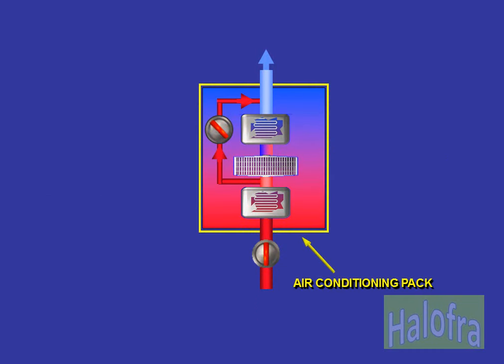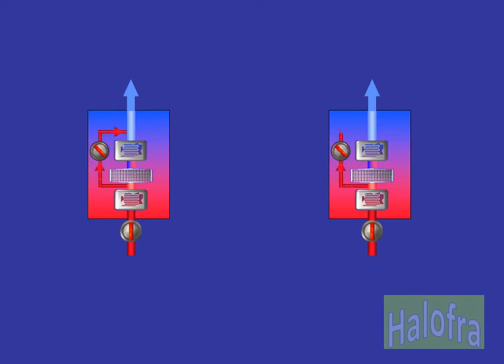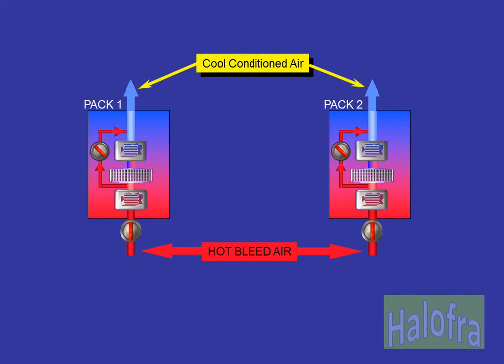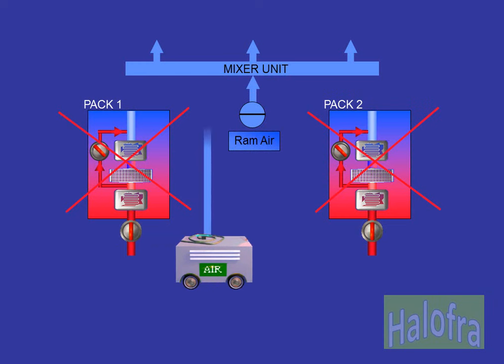To make things simpler, let's define the area within the yellow box as a pack. The two air conditioning packs operate automatically and independently to provide cool, conditioned air. The conditioned air from the packs is then fed to a mixer unit. The mixer unit may also receive conditioned air from a low-pressure ground connection or, in flight, fresh outside air from the emergency RAM air flap.